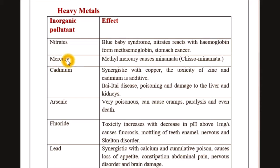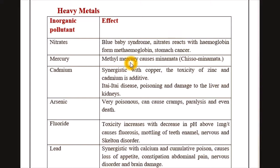The next example is mercury. Elemental mercury is not harmful, but if mercury is in the form of methyl mercury it causes Minamata disease. Minamata disease is transmitted through fish to human beings. Methyl mercury causes a free radical chain reaction, making it very harmful.